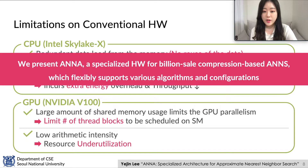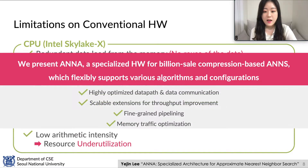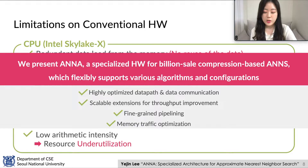To overcome these limitations, we present ANA, a specialized hardware for billion-scale compression-based Approximate Nearest Neighbor Search, which flexibly supports various algorithms and configurations. ANA is carefully designed to support a highly optimized data path and data communication, scalable extensions for throughput improvement, and fine-grained pipelining and memory traffic optimization.